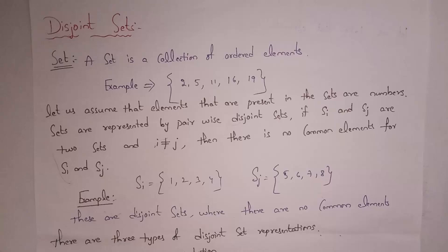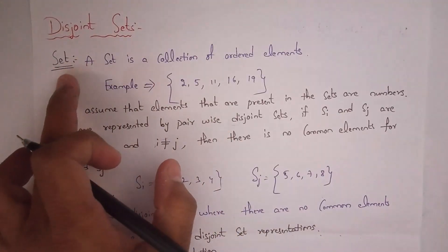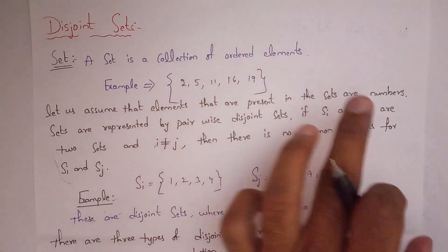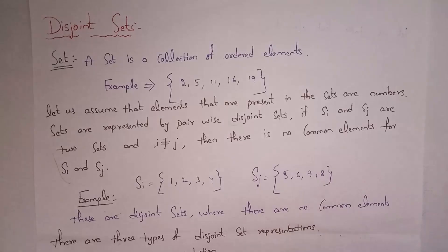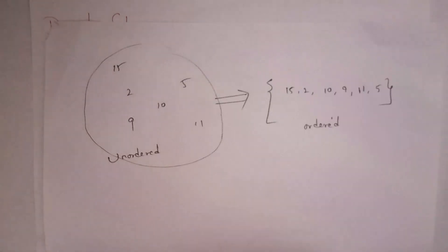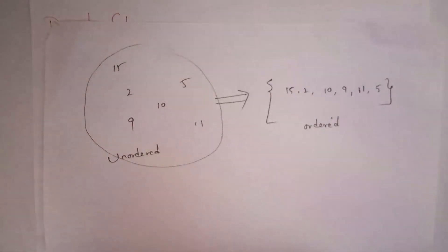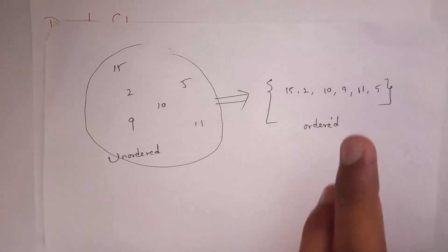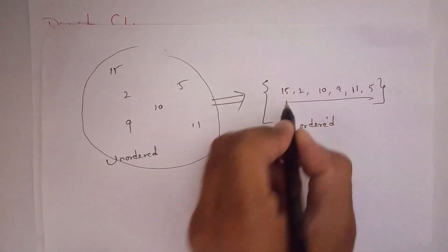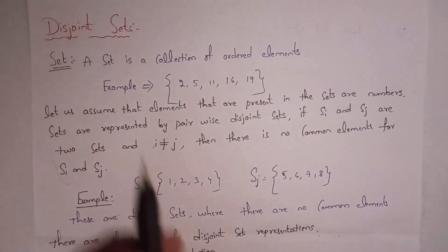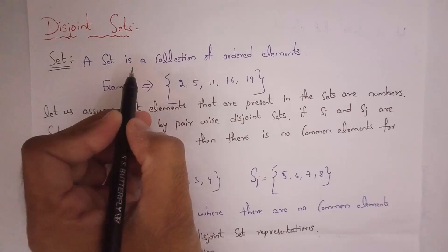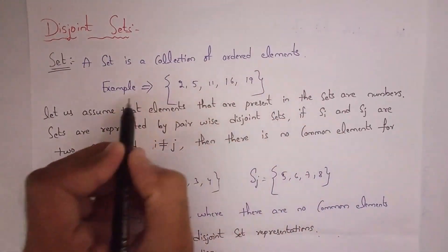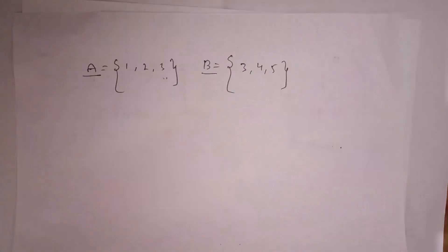Before starting this video, you first need to know what a set is. A set is an ordered collection of elements. For example, if elements are arranged in unordered format, we then arrange them in proper order. So a set is a collection of ordered elements.